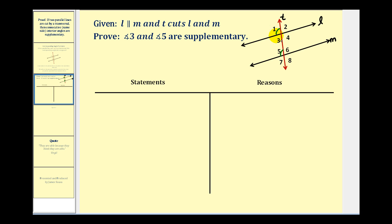So if we show that the sum of these two angles is 180 degrees, and angle one is congruent to angle five — which means their measures are equal — we should be able to perform substitution to show that angle three and angle five are supplementary. Let's go ahead and do that.